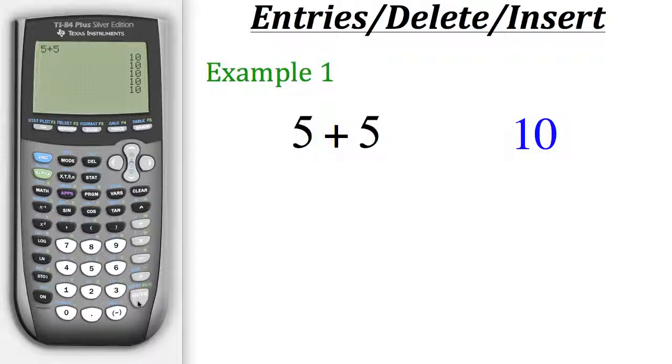But what if we want to take our result of 10 and do something else with it? Let's say for example add 5 more to it. All we have to do is start with the operation, so if we want to add 5 more to our result of 10 we could just hit plus and then 5.